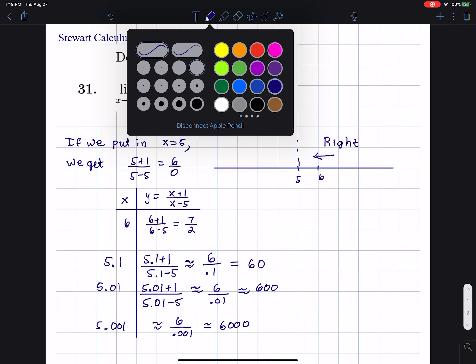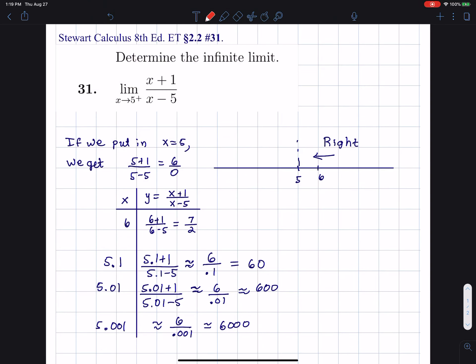Therefore, I am going to conclude that I can make y as great as I want. I can make it as big as I want by making x sufficiently close to 5.